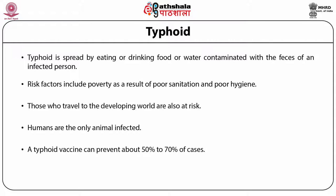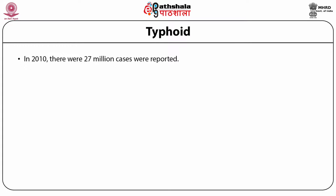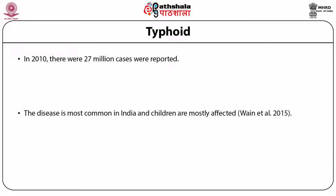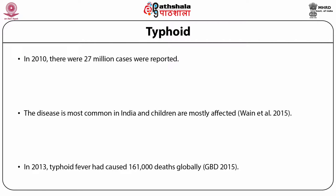A typhoid vaccine can prevent about 50% to 70% of cases and may be effective for up to 7 years. In 2010, there were 27 million reported cases. The disease is most common in India and children are mostly affected. In 2013, typhoid fever caused 161,000 deaths globally.